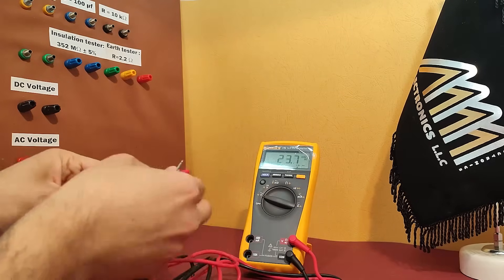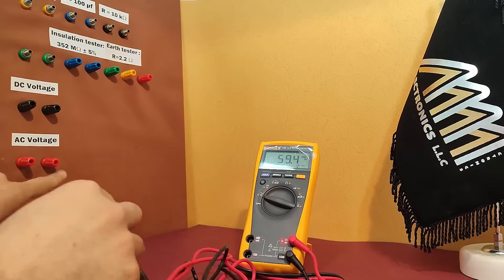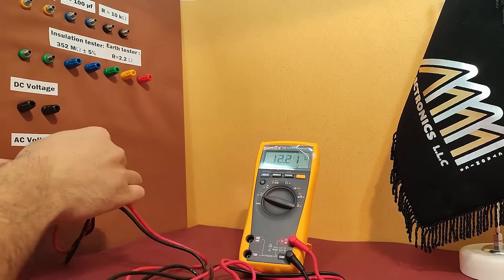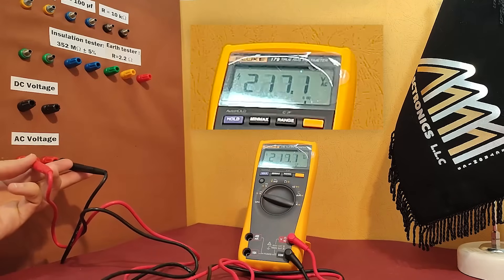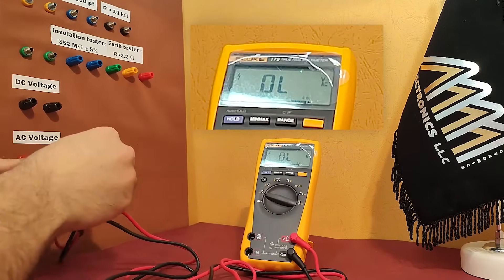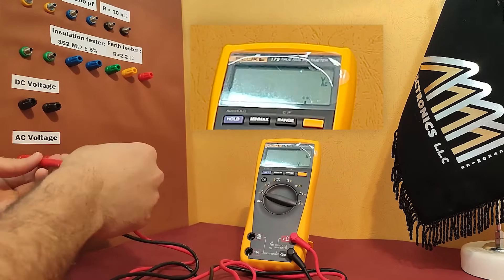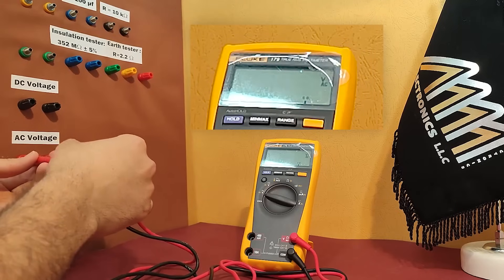To measure resistance you need to connect the leads to the component you want to measure. Make sure the component is not powered and the leads are not connected to any other components. The resistance will be displayed on the screen.